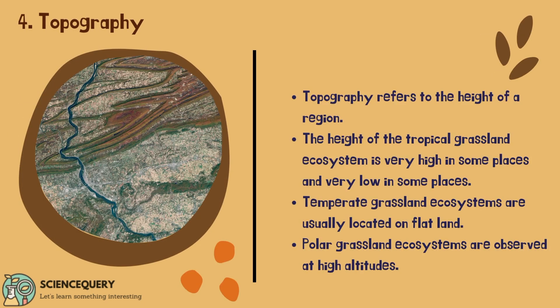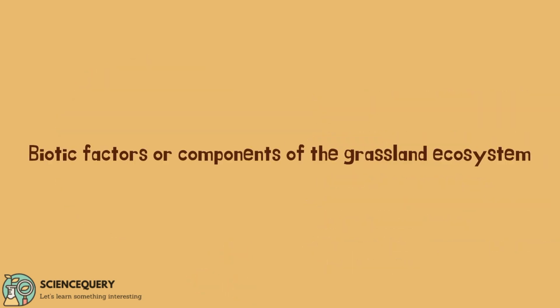The fourth abiotic factor of the grassland ecosystem is topography, which refers to the height of a region. The height of the tropical grassland ecosystem varies — very high in some places and very low in others. Temperate grassland ecosystems are usually located on flat lands. Polar grassland ecosystems are observed at high altitudes.